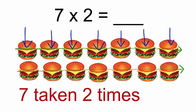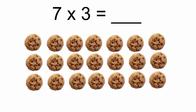Count the number of burgers in your picture. There are 14 burgers. So I can say seven into two is 14, or seven taken two times is 14.